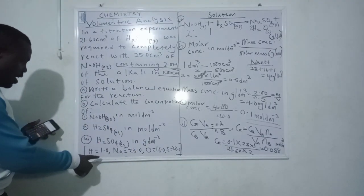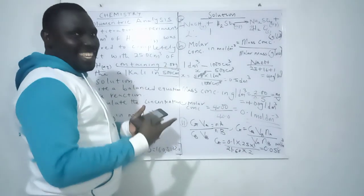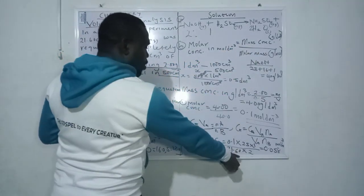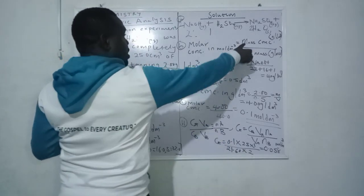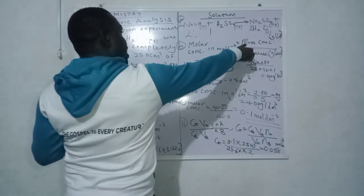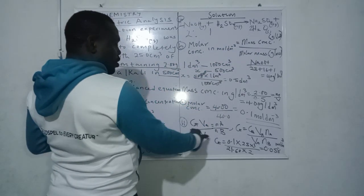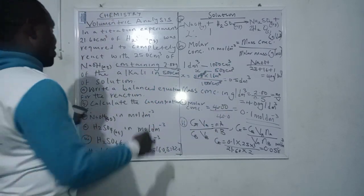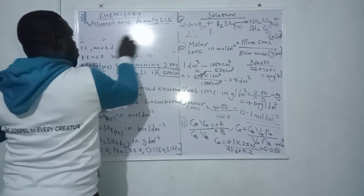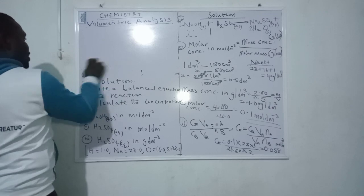The next question asks us to calculate the concentration of H₂SO₄ in gram per dm³. To do this, we just make mass concentration the subject of the formula: mass concentration = molar concentration × molar mass. We already know the molar concentration of H₂SO₄. Let me quickly calculate the molar mass of H₂SO₄ for students who might be confused.